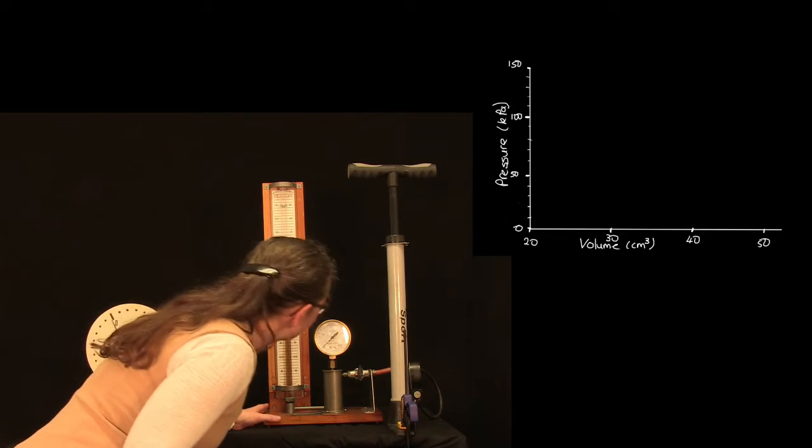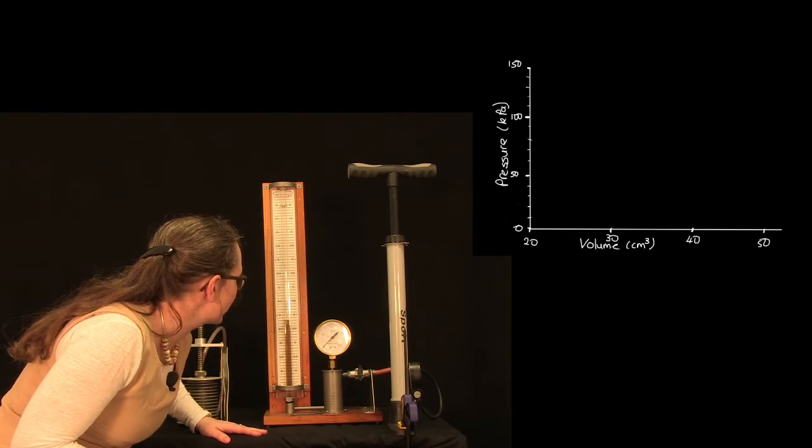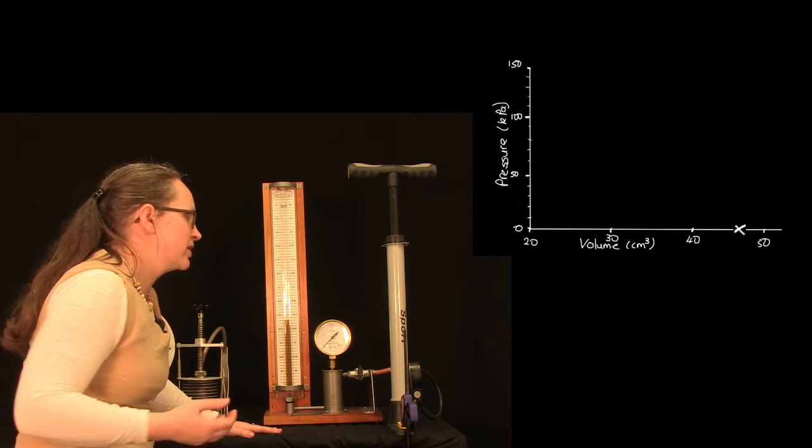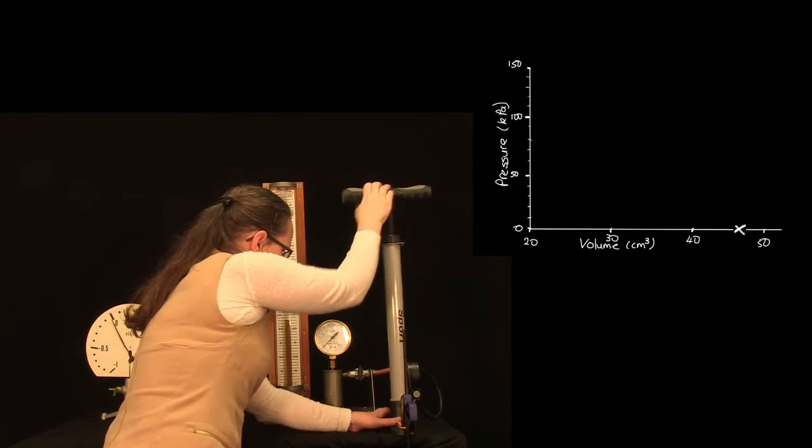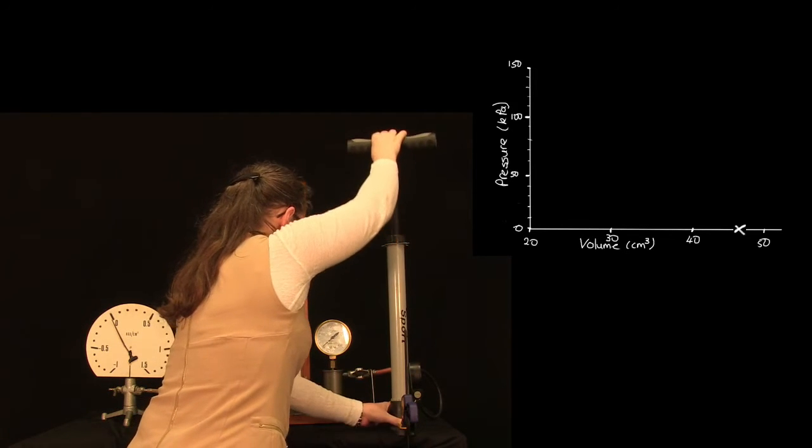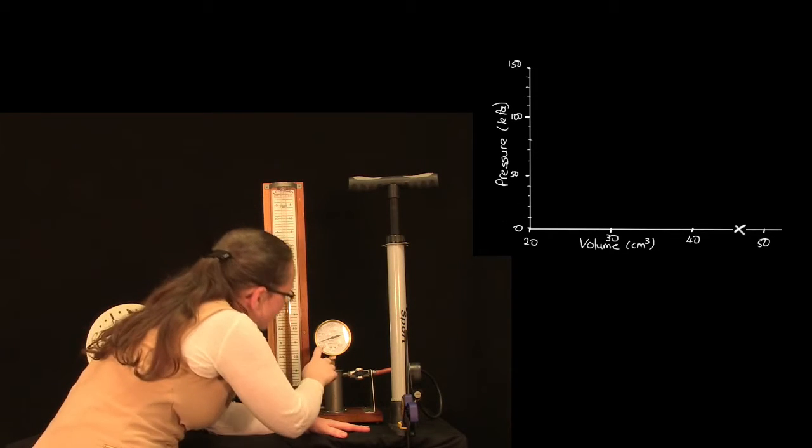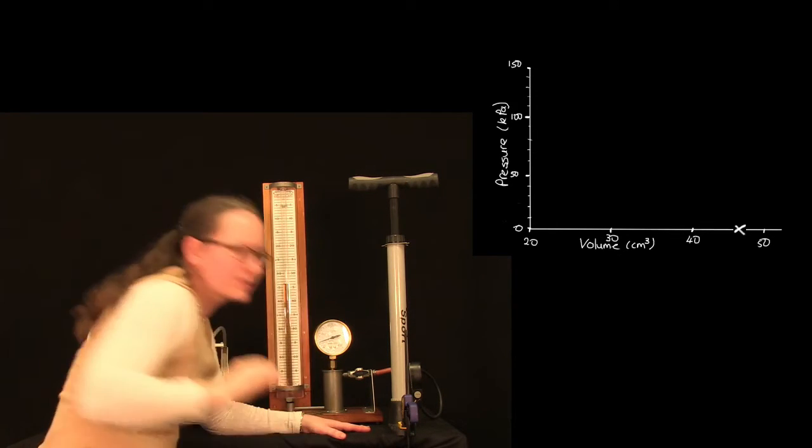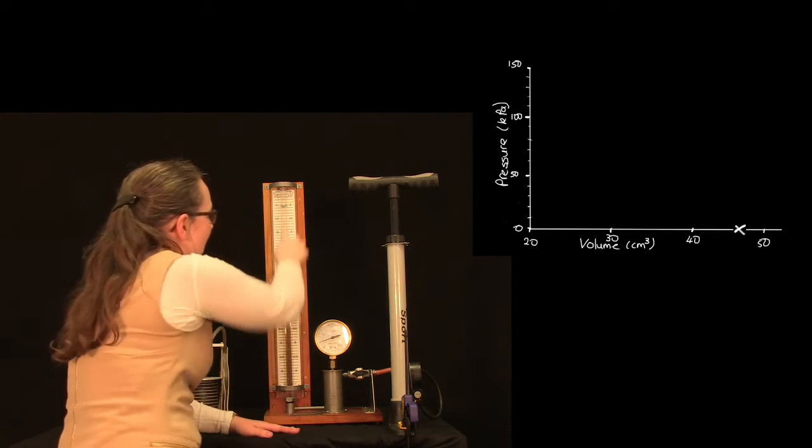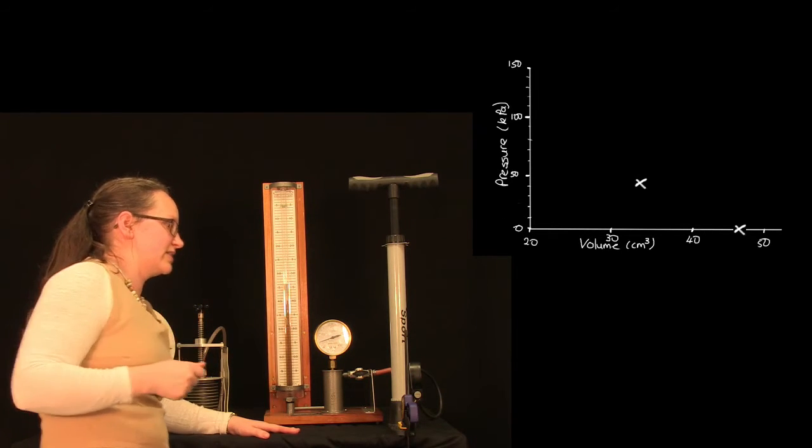So to start with, we've got zero kilopascals and a volume of air of 47 centimeters cubed. So let's slowly increase that pressure. Now we've got a pressure reading of around about 40 kilopascals, quite a lot of uncertainty in these numbers, and we've got a volume of 34 centimeters cubed.